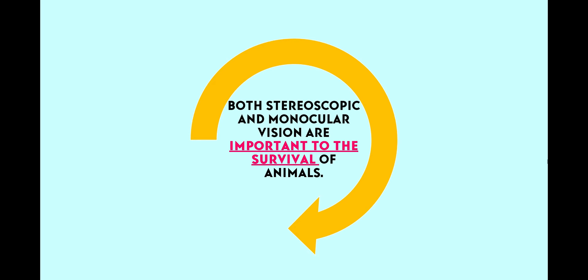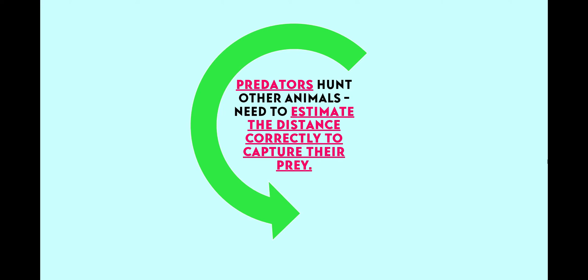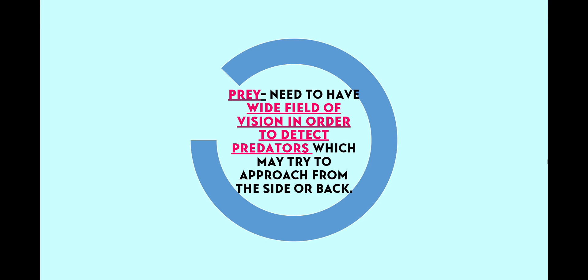As a conclusion, both stereoscopic and monocular vision are important to the survival of animals. Predators use their stereoscopic vision to estimate distance correctly to capture their prey. Meanwhile, prey need to have a wide field of vision in order to detect predators which may try to approach them from all directions.